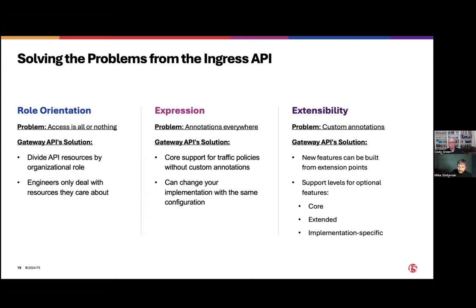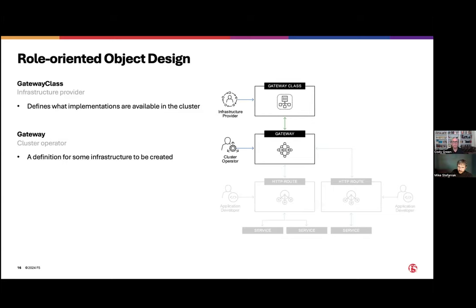I want to dig in a little bit deeper into role orientation. When we look at the object design in the API, you're going to have your gateway class, which defines what implementations are available in the cluster — think of this as what your infrastructure provider sets up. This could be deployed as part of your core OpenShift environment, for example. Once I have my infrastructure deployed, I need to be able to create a gateway itself. In this scenario I may have a cluster operator. A gateway is a definition of some infrastructure to be created — think of tying my FQDN or ingress to the gateway. This may be what the platform operations team is doing, and they're setting up that gateway for everyone to use.